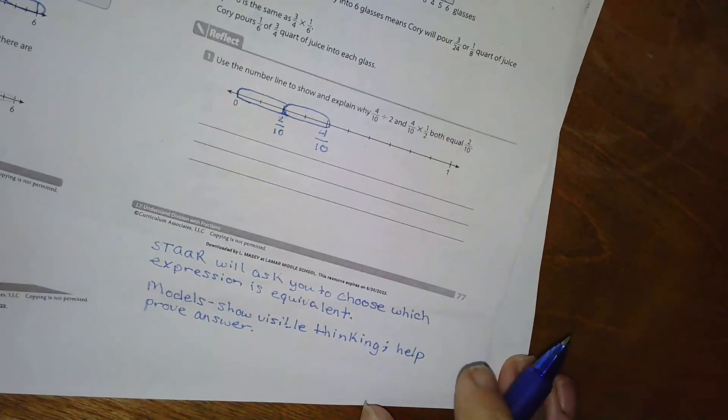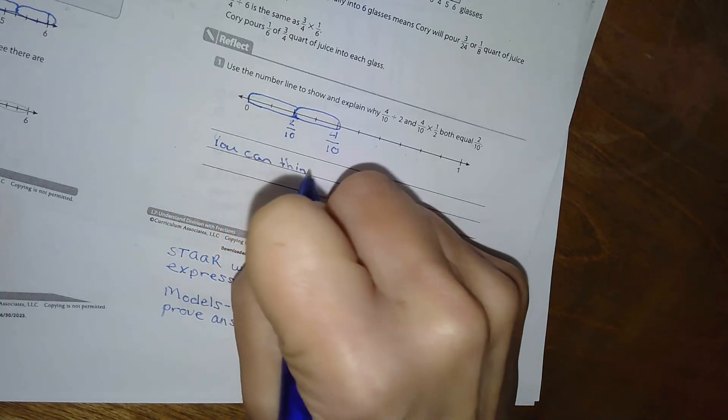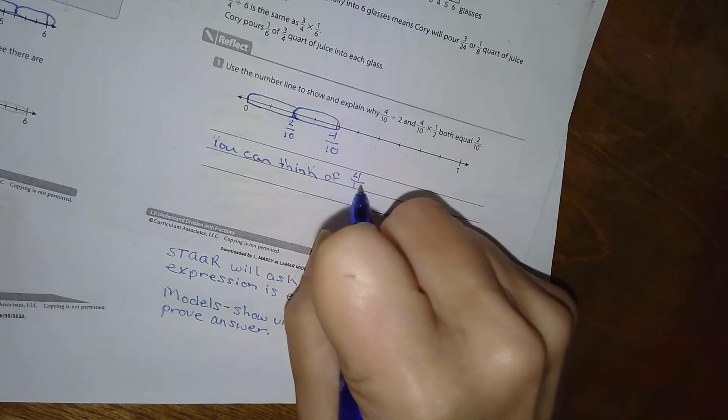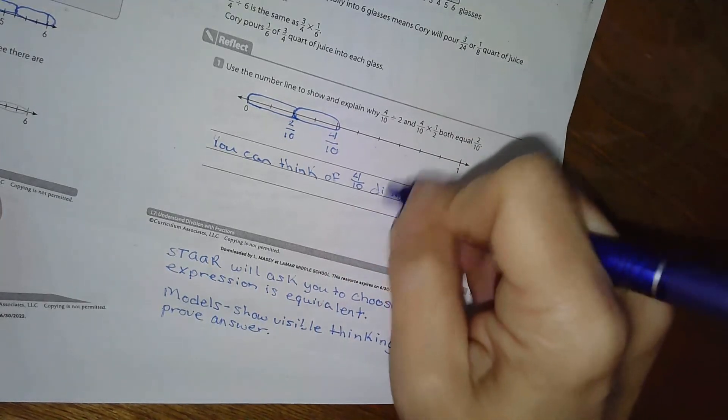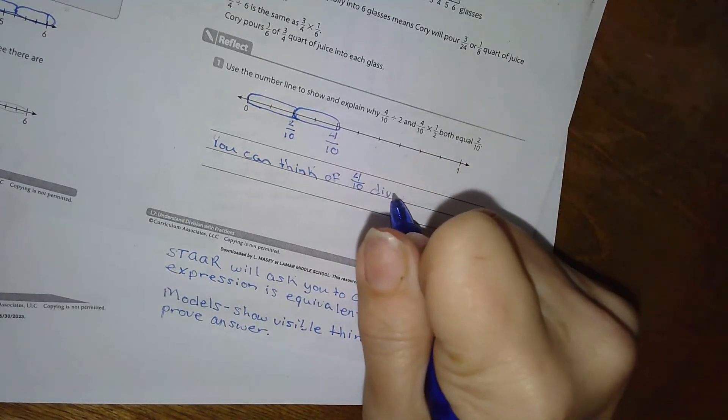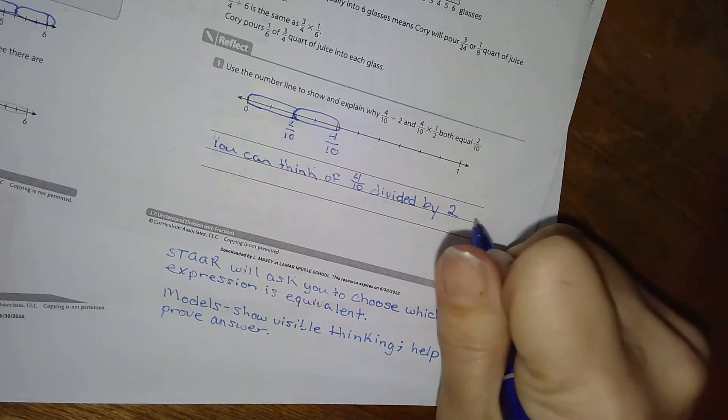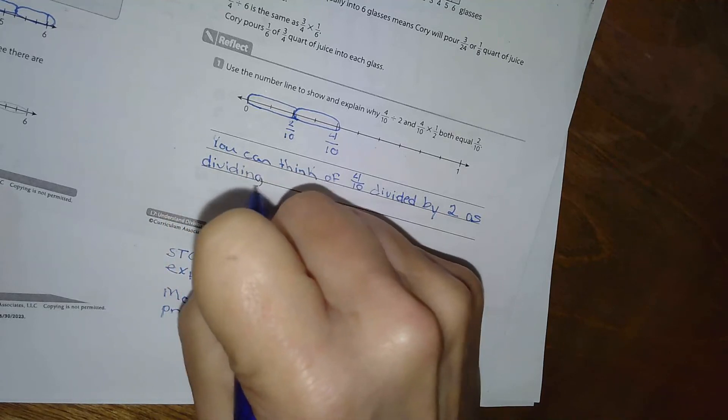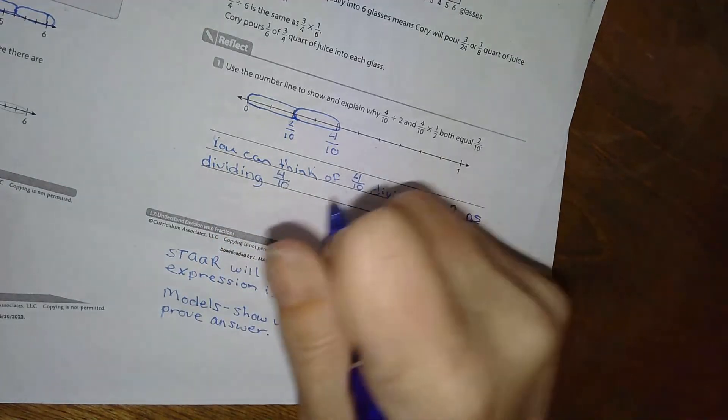And I have two groups there, so you can think of four-tenths by two as dividing four-tenths into two equal parts.